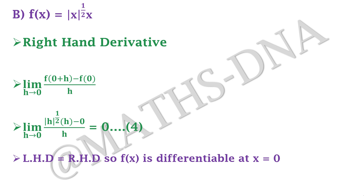Now students make a mistake here. They see that options A and B are differentiable, so they don't check option C and directly tick that all of them are differentiable at x = 0, thinking it is a part C question so all must be correct. Don't be in a hurry. Take your time and check each and every option, because part C questions carry 4.75 marks — very important and very crucial. They typically make options A and B correct so that you might think C and D are also correct.